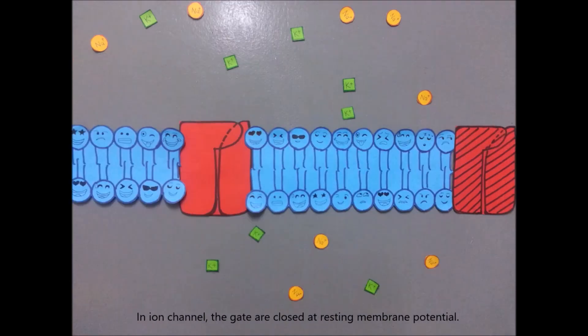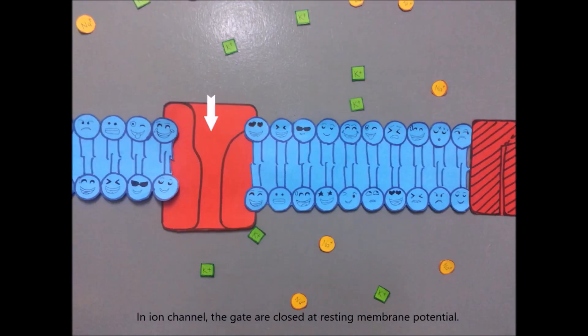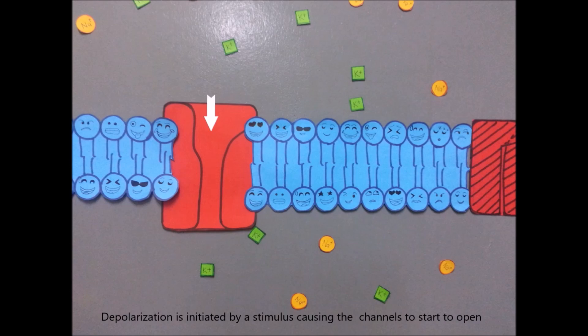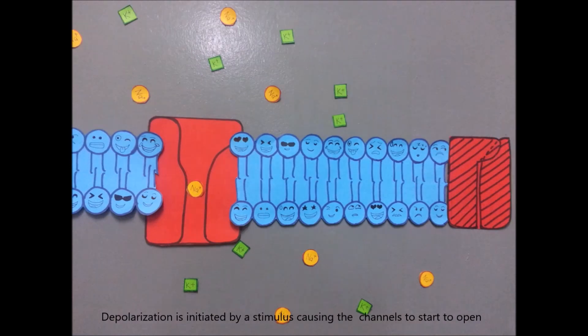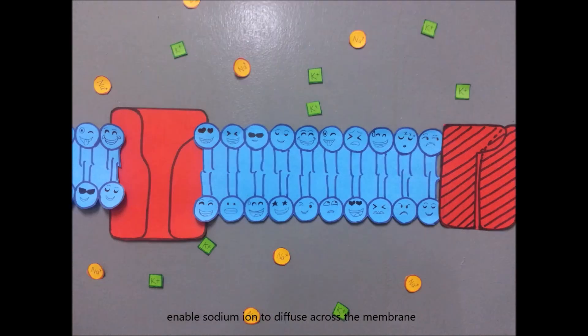In ion channel, the gates are closed at the resting membrane potential. The depolarization is initiated by a stimulus causing the channel to start to open, enables sodium ions to diffuse across the membrane.